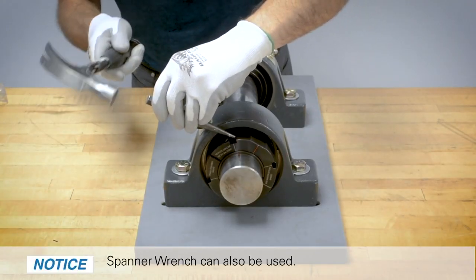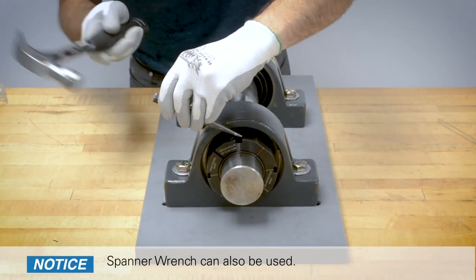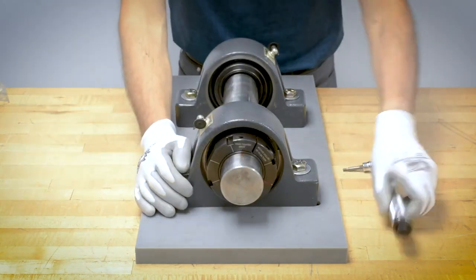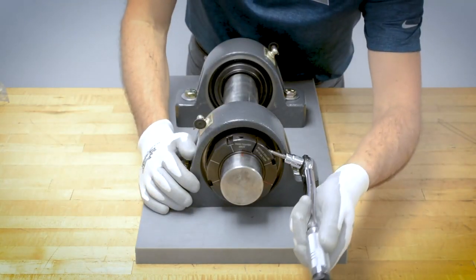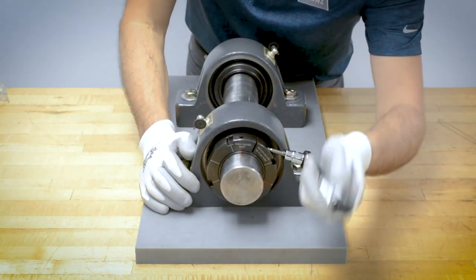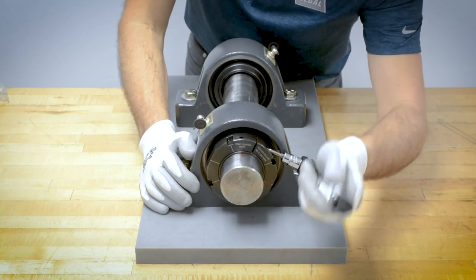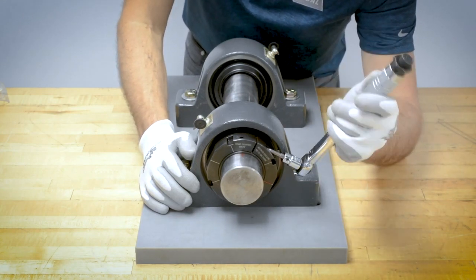Using a hammer and drift, rotate the collar nut the required amount. Tighten the cap screw on the collar to the torque specified in the instructions. The cap screw and split collar nut provide additional clamping force to improve lock reliability.